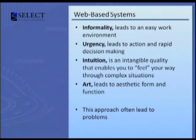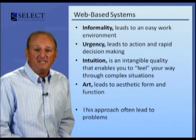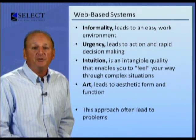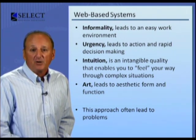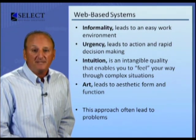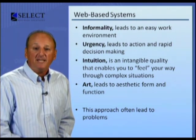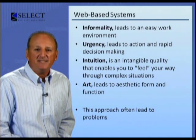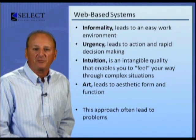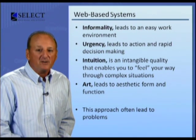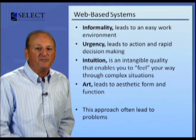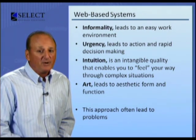In the early days of the web, we built systems using informality, urgency, intuition, and art. Informality leads to an easy work environment, one in which you can do your own thing. Urgency leads to action and rapid decision-making. Intuition is an intangible quality that enables you to feel your way through complex situations. Art leads to aesthetic form and function, to something that pleases those who encounter it.